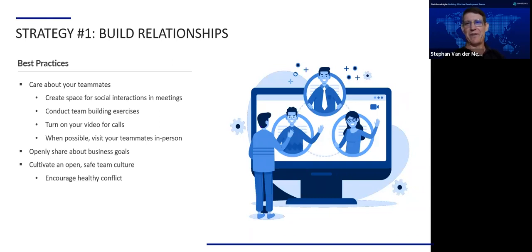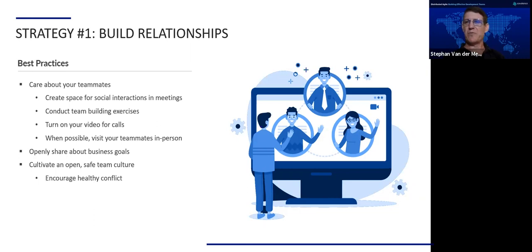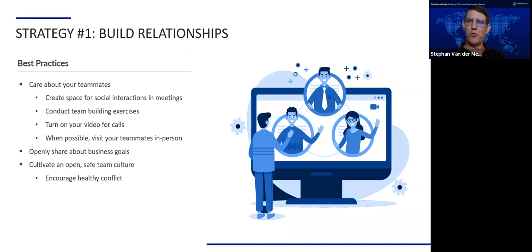Some best practices we found for building relationships: first, we need to care about our teammates. It's good to be very intentional about creating space for relationships to form. We make space in our meetings — maybe the first five minutes — for social interaction: talking about family, hobbies, what's happening in your life, the game that happened on Saturday. We also bring in icebreakers from time to time — for instance, a blog post for each person on the team to share their hobbies. Especially at the beginning of a new product team, it's important to get a little more time to get to know each other personally.